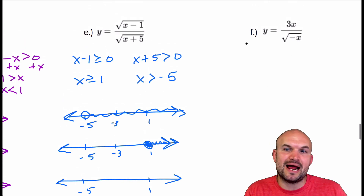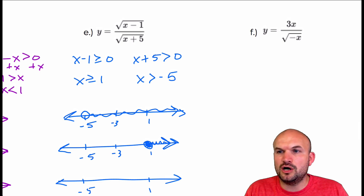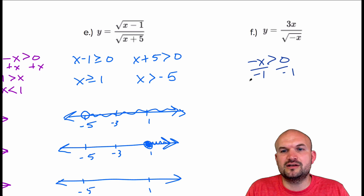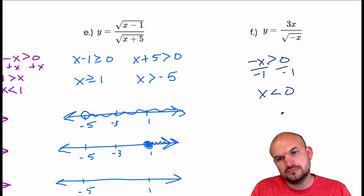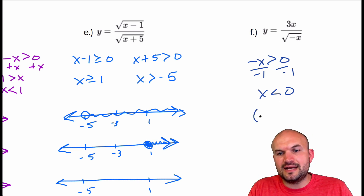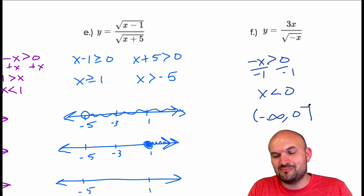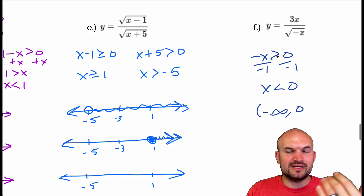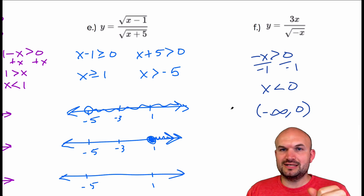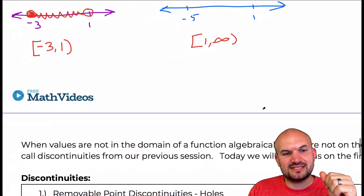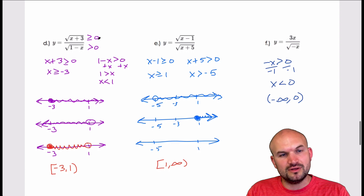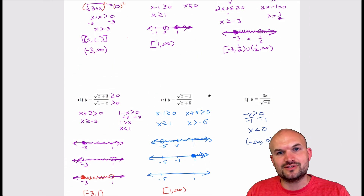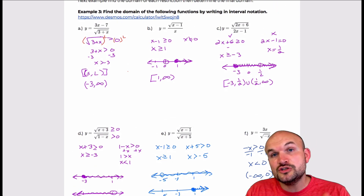Last example: I have a radical in the denominator only, similar to example one. I set the radicand negative x strictly greater than zero. Dividing by negative one flips the inequality, so x is less than zero. That gives all values less than zero, from negative infinity to zero. Be careful here: x cannot equal zero because that makes the denominator zero — that's why we used the strict greater-than sign. So zero is not included, and the domain is (-∞, 0). Just remember: radicand must be greater than or equal to zero, and the denominator cannot equal zero.